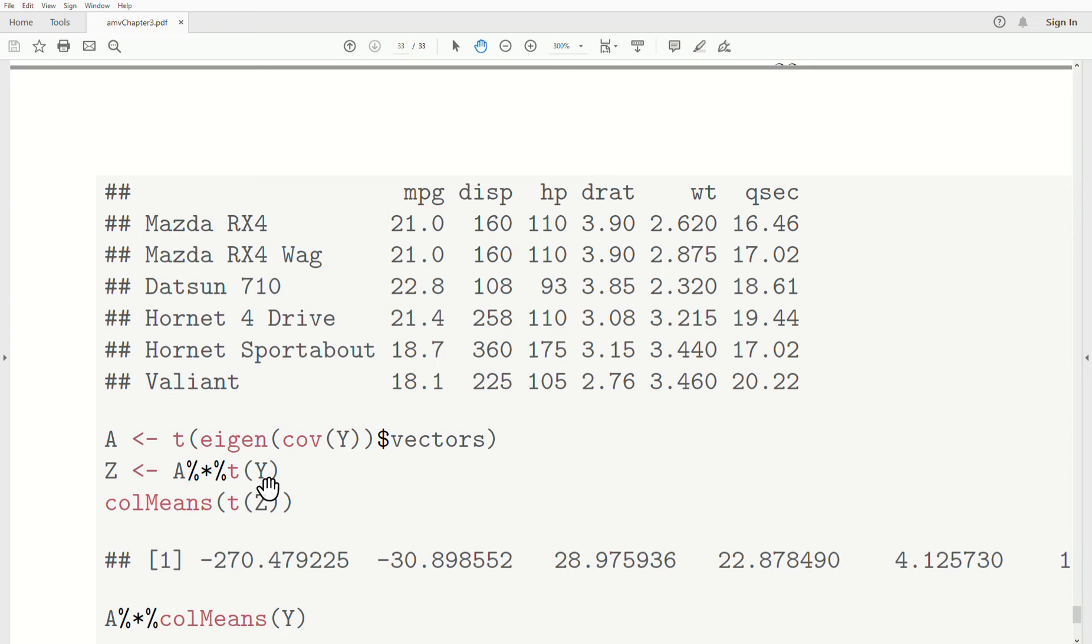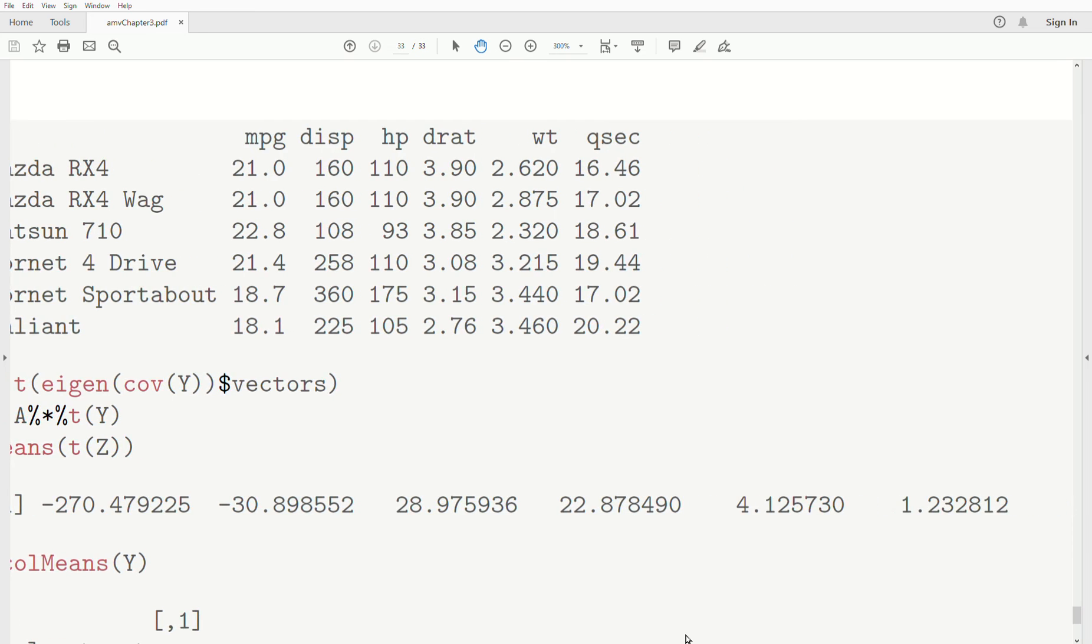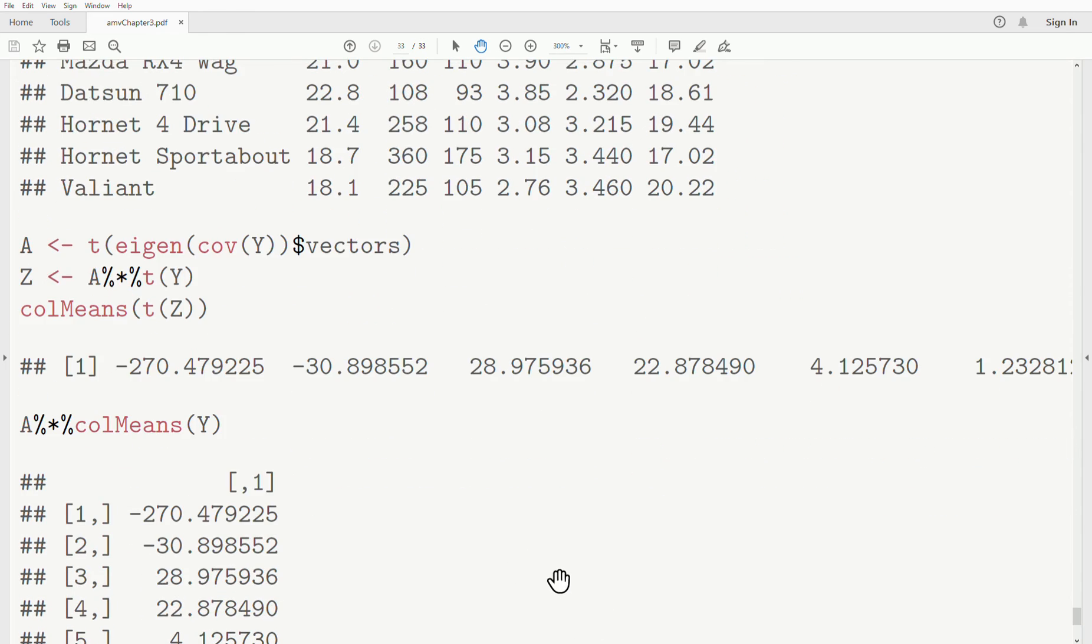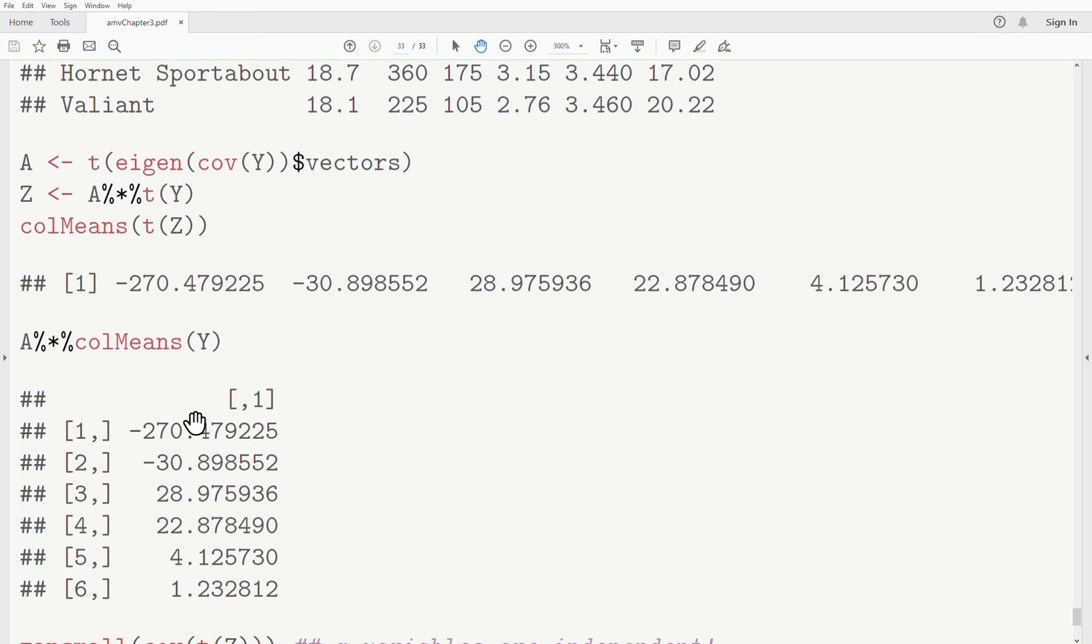Now, you have to think about the structure of this. Here, Z, each column is an observation, and the rows are the different variables. But the data matrix that we looked at, Y, it's the opposite. The columns are the variables, and the rows are the observations. So to get a mean vector, you either have to say row means of Z or column means of Z transpose. It creates this mean vector. But we could also just take A times the mean vector of Y. Notice it's the same: minus 270, minus 30, 28, 22. So it's the same.